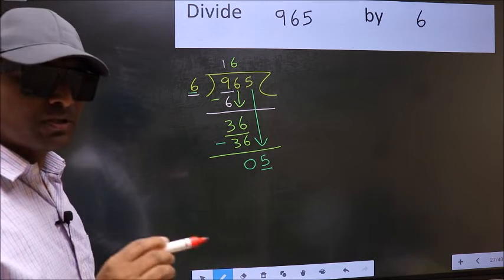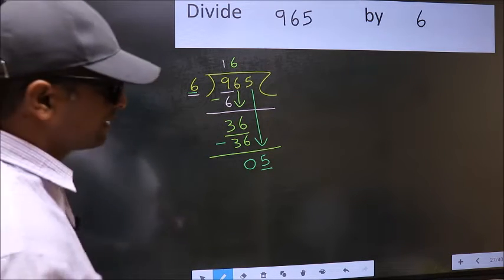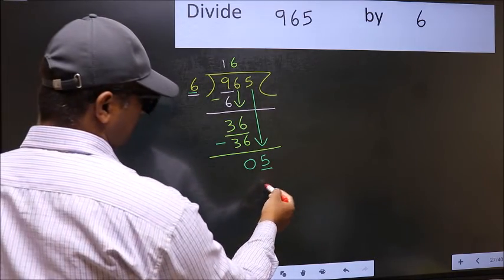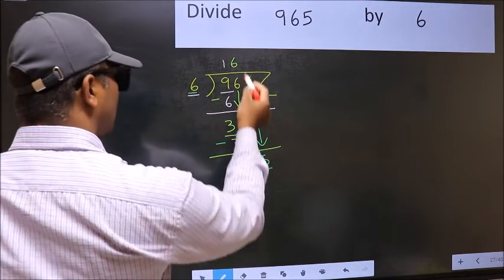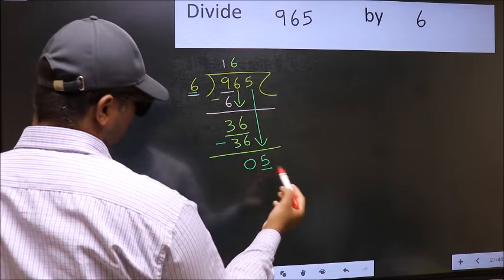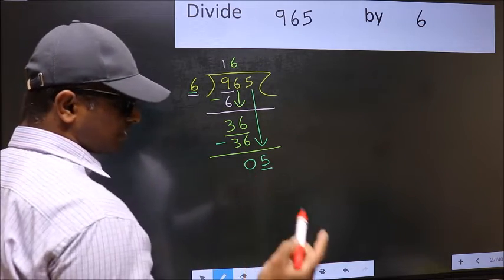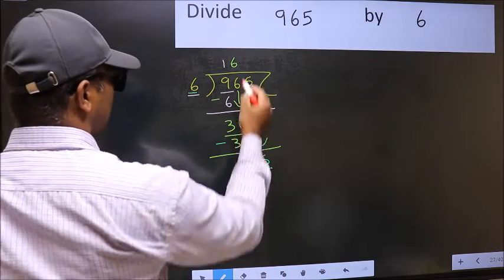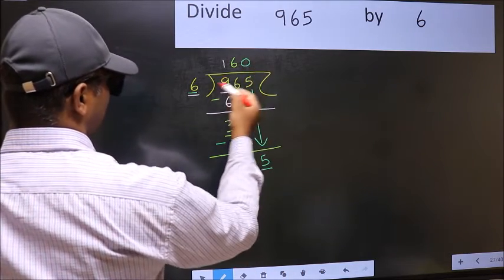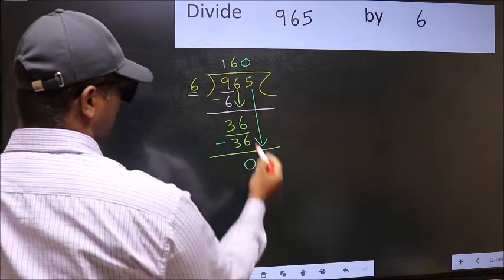Instead, what you should think of doing is, what number should we write here? If we take 1, we will get 6, but 6 is larger than 5. So what we should do is take 0. So 6 into 0 is 0.